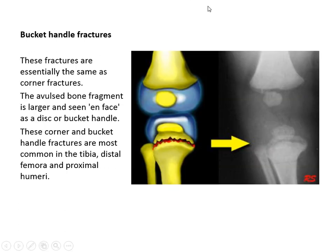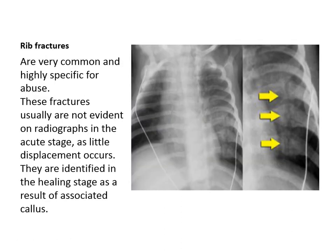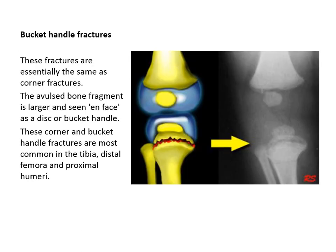The bucket handle fracture is similar to the corner fracture, but the avulsed bone is larger. In this example, there is a fracture of the upper tibia shown by diagram and x-ray. The mechanism is the same as the corner fracture but the fragment of bone is larger — essentially an epiphyseal separation.